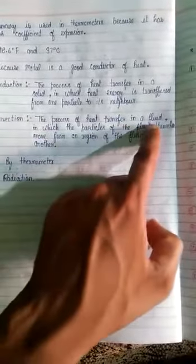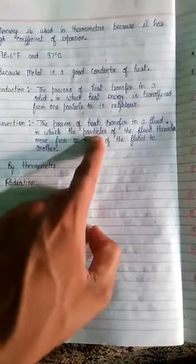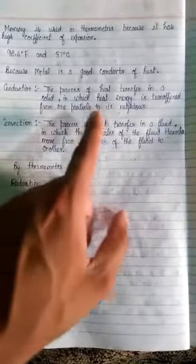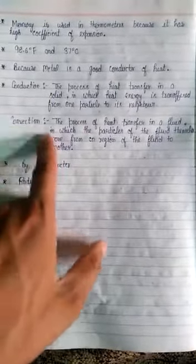And on the other hand, convection is the process of heat transfer in fluid in which the particles of the fluid themselves move from one region of the fluid to another. Conduction is the process which happens in solids and convection is the process which happens in liquids.